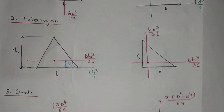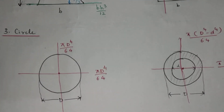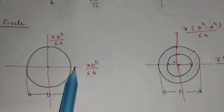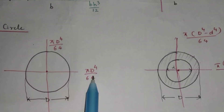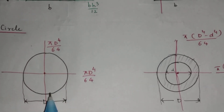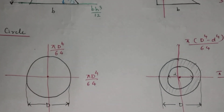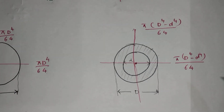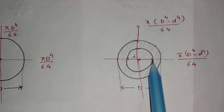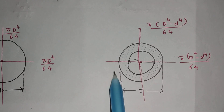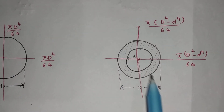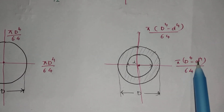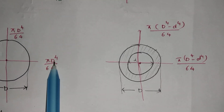The next figure is a circle. For a circle, the CG is at the center. The moment of inertia value about the centroidal axis is π D raised to 4 by 64. For the other centroidal axis it is also π D raised to 4 by 64, as the figure is symmetric, where D is the diameter. For a hollow circle or ring, the inner diameter is small d and the outer diameter is capital D, so the moment of inertia about the centroidal axis is π(D⁴ − d⁴) by 64.